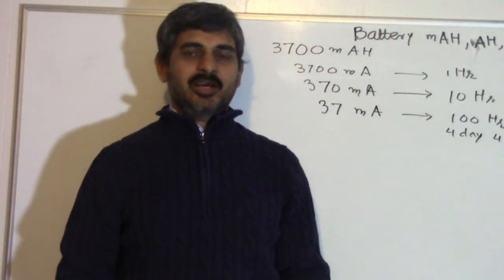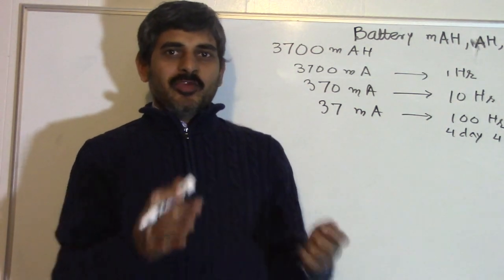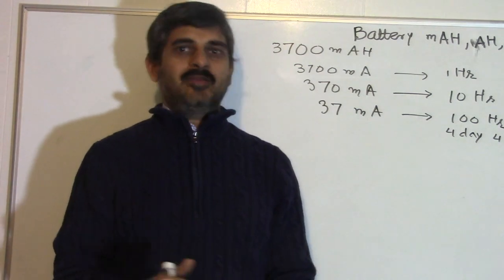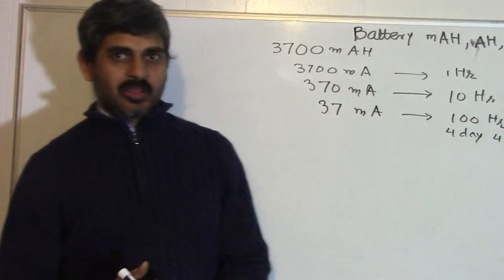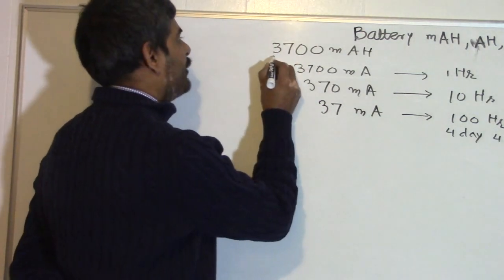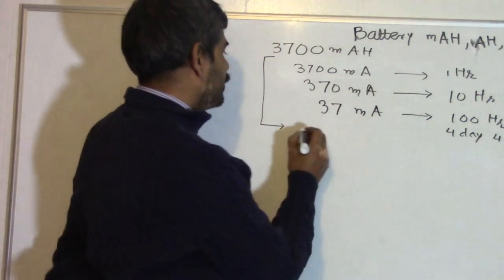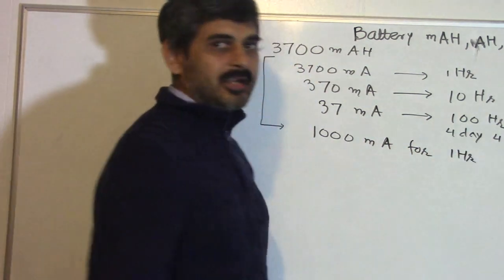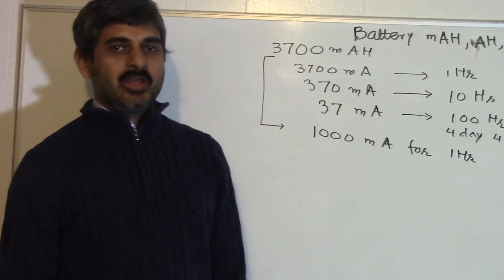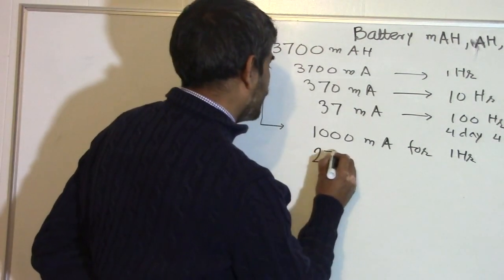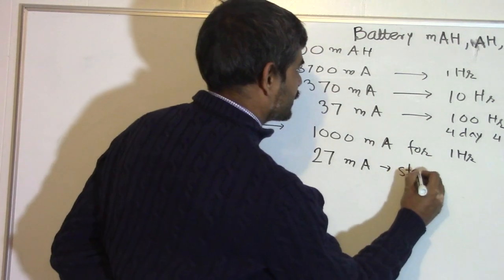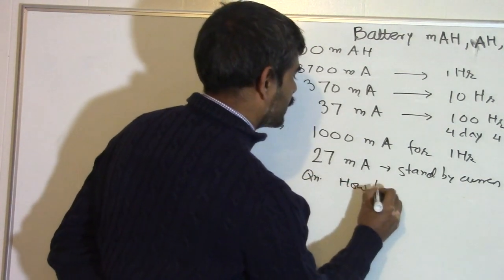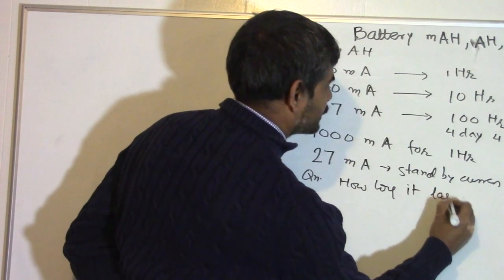In a usual use case, like in a cell phone, you don't always draw a very high current. What you do is, you take a high current when you are talking on the phone and you have a lower standby current when you are not talking. So this is a mixed use case. For example, if you have a 3700 milliampere hour battery and you take 1000 milliampere for one hour when you are talking, and when you are not talking it is only taking 27 milliampere — that is the standby current. The question we might want to answer is: how long will it last in standby?